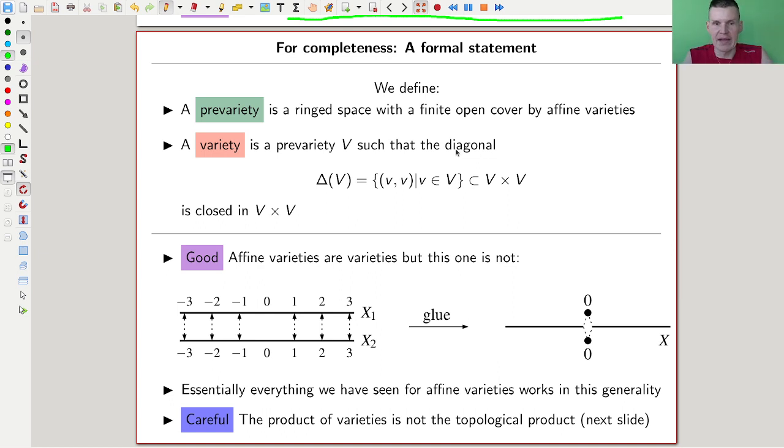So a prevariety is the patchwork thing, and a variety is a prevariety where that diagonal is closed, period. And you can check that all the nice affine varieties that we like are varieties, but this funny space here is not. And that's kind of the whole point of this definition, very similar to the definition of a manifold. You add this Hausdorff condition to get rid of kind of strange spaces.